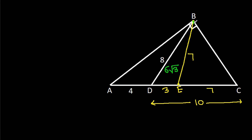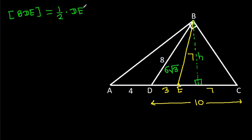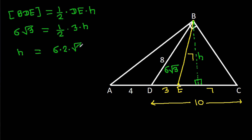Now, suppose the height is h. Then the area of BDE is equal to 1 by 2 times DE is 3 times h. Since the area of BDE is 6√3, we have 6√3 equals 1 by 2 times 3 times h. So h is equal to 6 times 2 times √3 by 3, and since 3 divides into 6 twice, h is 4√3.